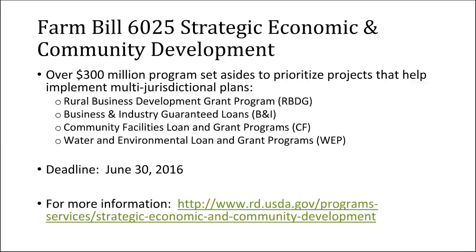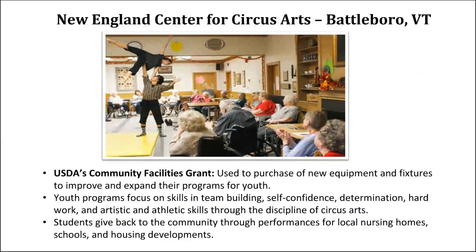There is a new program from the Farm Bill called Strategic Economic and Community Development, which sets aside funds from USDA Rural Development for four of our programs for communities trying to implement their regional plans. This provision rewards communities for doing the hard work of bringing multiple partners together across town and county lines to develop long-term strategic plans. The deadline for this year is June 30th, so it's right around the corner, but it will start again at the beginning of the fiscal year. Many of you will be going through your workshops, and something that may come out of them is a plan for your community or region — and there actually are funds to help you implement that plan.